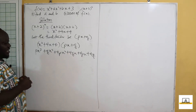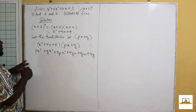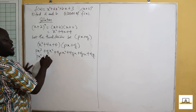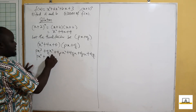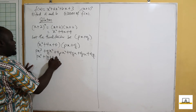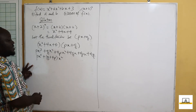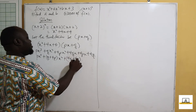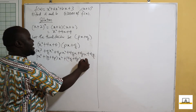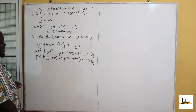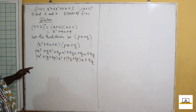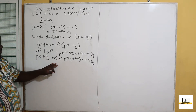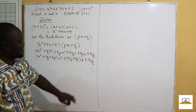Now let's group like terms. We shall have px cubed, then plus q plus 4p as the coefficient of x squared, then 4q plus 4p as the coefficient of x, and then plus 4q as the constant term. We have written this in the form x cubed plus x squared term plus x term plus constant.